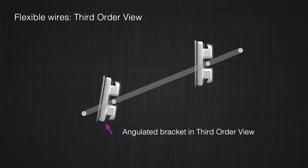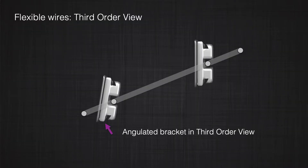But what happens if one of the brackets is angulated compared with the other one and you put a piece of round wire in the system? Do you think any force or couple appears in the system? You're absolutely correct — the brackets cannot twist the round wire. Therefore, even though the brackets in the third order view are twisted, they will not produce any couple or forces in that system. The wire was passive in the first and second order view, and in the third order view, the round wire will stay passive.